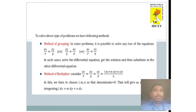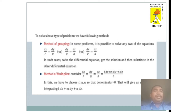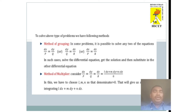To solve such problems, we use the following methods. One method is the method of grouping, where we simply use the separable variable approach. Another is the method of multipliers, where we choose multipliers L, M, N such that the denominator equals 0, giving the form dx/P = dy/Q = dz/R = (L dx + M dy + N dz) / 0. After this, we integrate to get the required solutions.